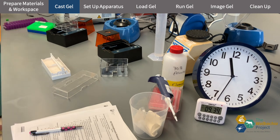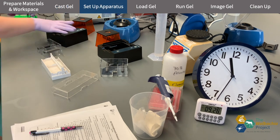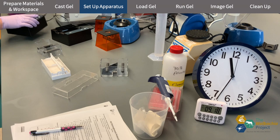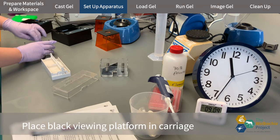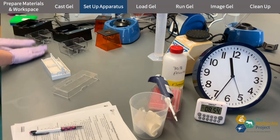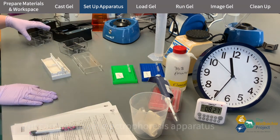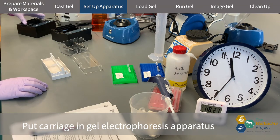In the meantime I'm going to get the gel electrophoresis apparatus set up. I put this black piece of plastic into the viewing platform in the buffer tank. This makes it easier to see the gel while it's running. Then I drop the buffer tank into the carriage.